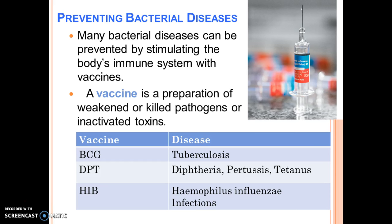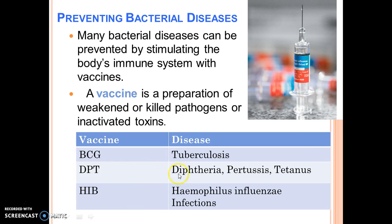How to prevent bacterial disease? Many bacterial diseases can be prevented by stimulating the body's immune system with vaccines. A vaccine is a preparation of weakened or killed pathogens or inactivated toxins. Examples include: BCG vaccine for tuberculosis, DPT for diphtheria, pertussis and tetanus, and Hib for Haemophilus influenzae infections.